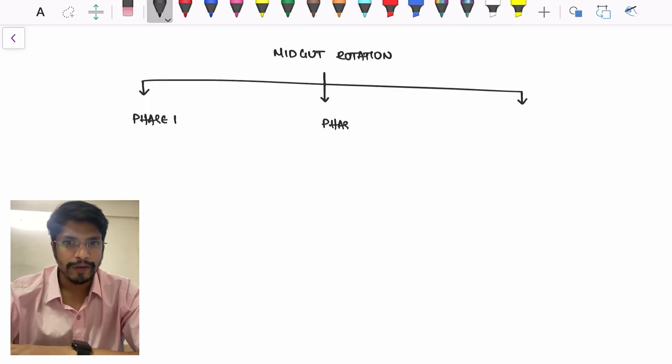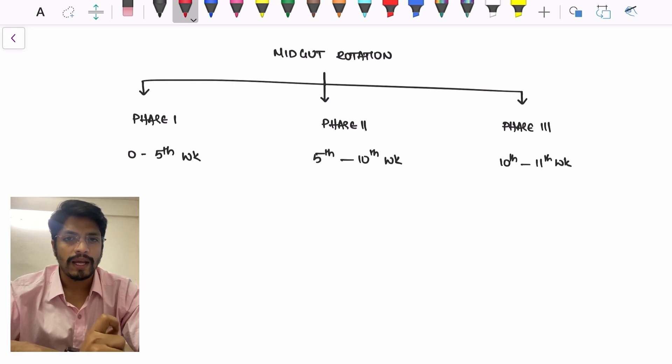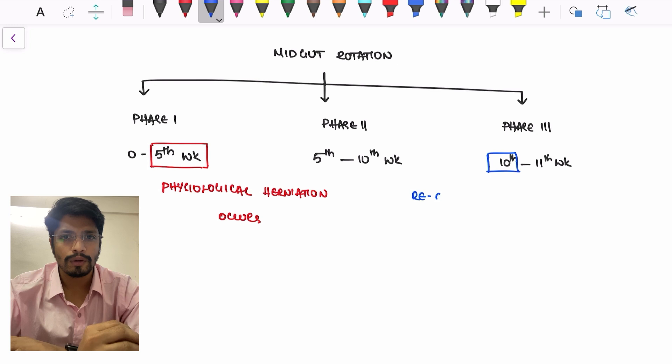Midgut rotation is divided into three phases. Phase 1 lasting between 0 to 5th week, Phase 2 5th to 10th week, Phase 3 10th to 11th week. Physiological herniation occurs at 5th week, and by end of 10th week, these physiologically herniated contents re-enter into the abdominal cavity.